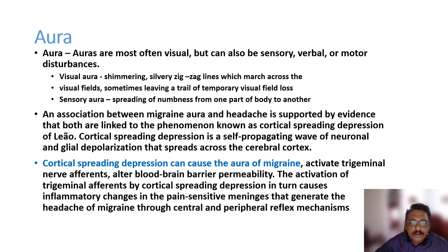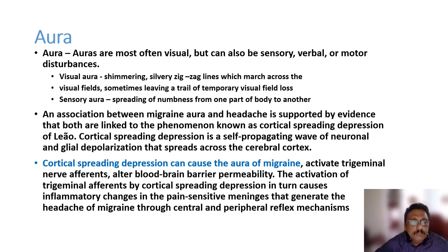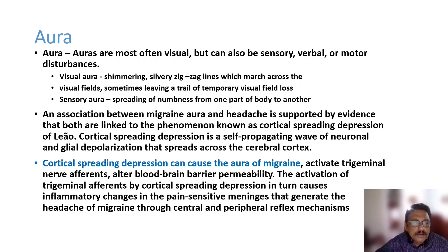Migraine with aura is called classical migraine, but it is not very common in clinical practice. Of 100 patients, only a few will clearly describe an aura history. Many may have aura without noticing it, so detailed history-taking is essential to determine whether a patient has migraine with or without aura.